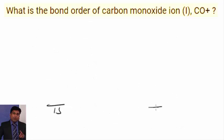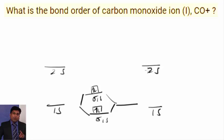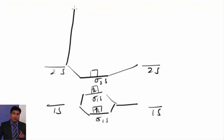1s orbital, 1s orbital, these two atomic orbitals will give rise to two molecular orbitals, sigma 1s and sigma star 1s. We will fill 2 electrons here, then 2s orbital, 2s orbital.